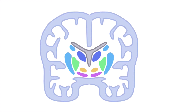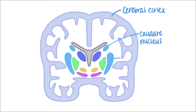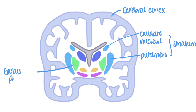There are several primary structures of the basal ganglia involved in these pathways. Here, I have already drawn a coronal section of the brain. The grey outline of the brain is the cerebral cortex. This light blue dot on the top is the caudate nucleus, and the same coloured wedge below it is the putamen. These two structures can be collectively called the striatum. The green wedge close by is the globus pallidus, which can be further broken down into external globus pallidus, commonly abbreviated as GPE, and internal globus pallidus, GPI.